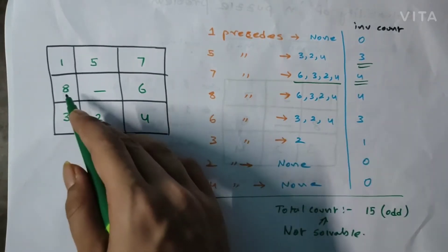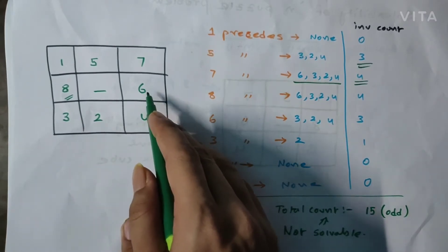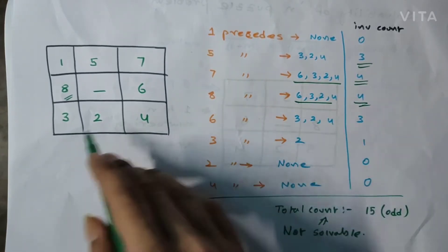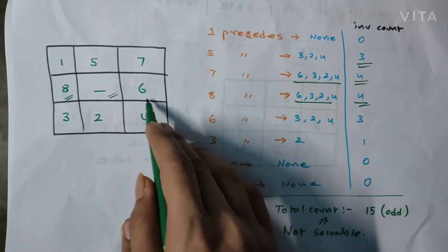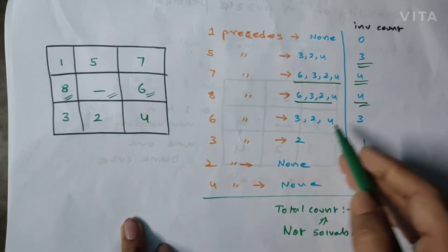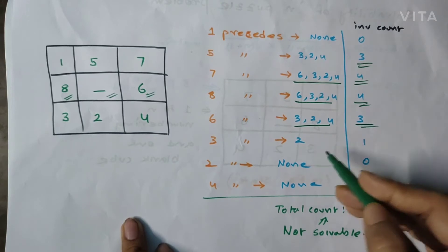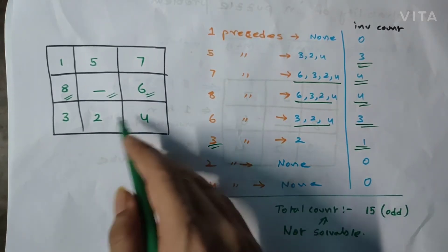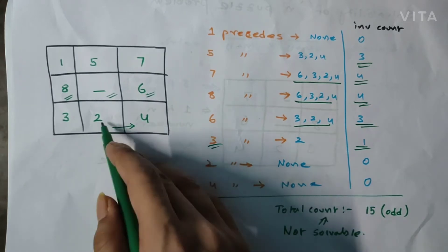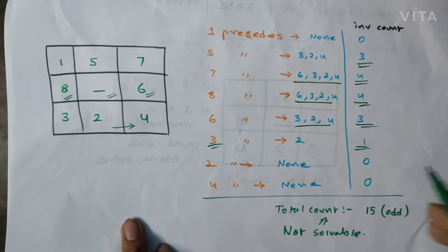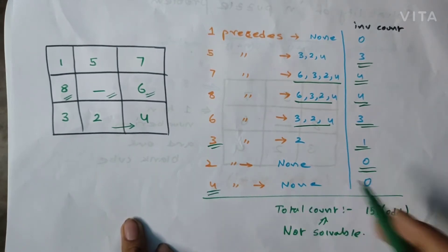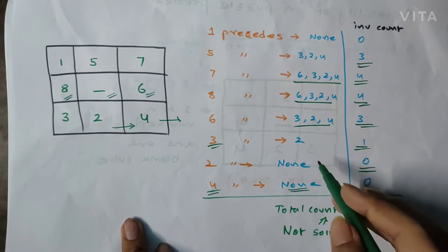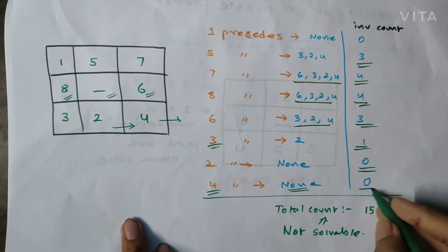For 8, it is preceding 6, 3, 2, and 4, so the inversion count is 4. We skip the blank. For 6, it is preceding 3, 2, and 4, so the inversion count is 3. For 3, it is preceding 2, so the inversion count is 1. For 2, the next value is 4 which is greater than 2, so inversion count is 0. For 4, there are no values after it, so inversion count is also 0.